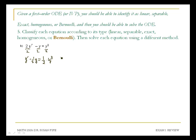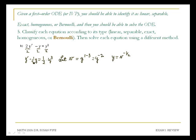For a Bernoulli ODE, you can make a substitution where v, or whatever letter you want to choose, is equal to y raised to the 1 minus whatever this power of y is on the right side. In this case we get v equals y to the 1 minus 3 power, or v equals y to the negative 2nd power. And then if I take this equation and solve it for y, that tells me that y is v to the negative 1 half power.